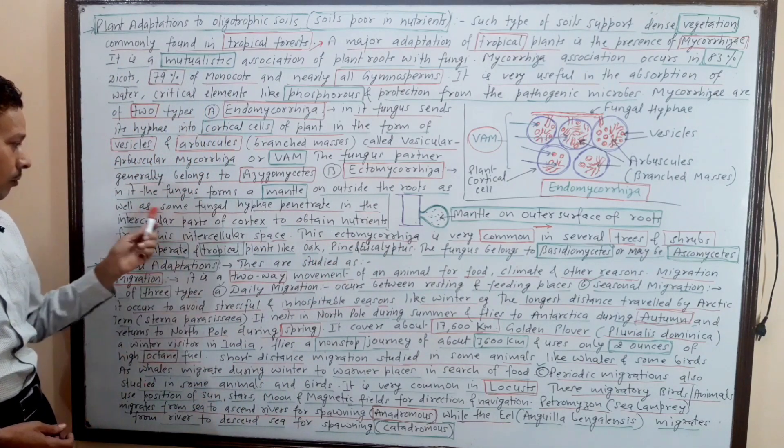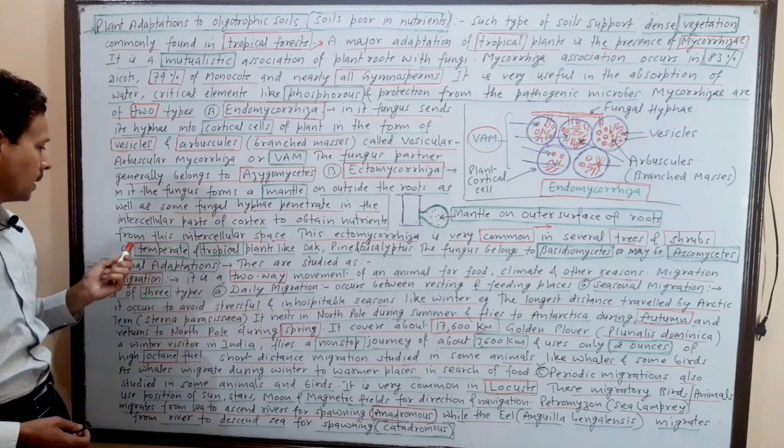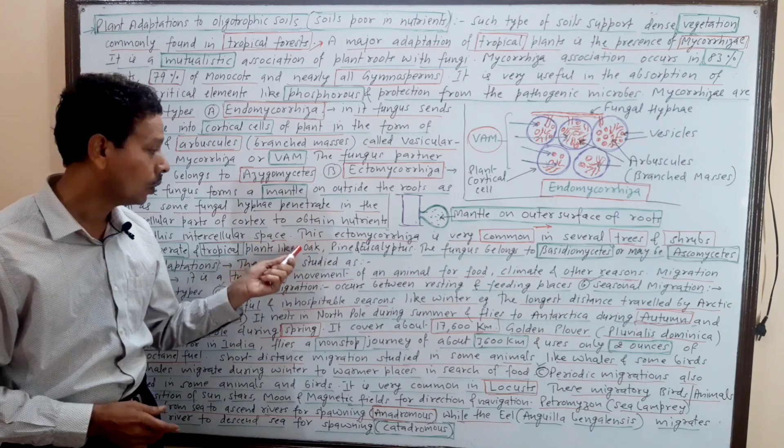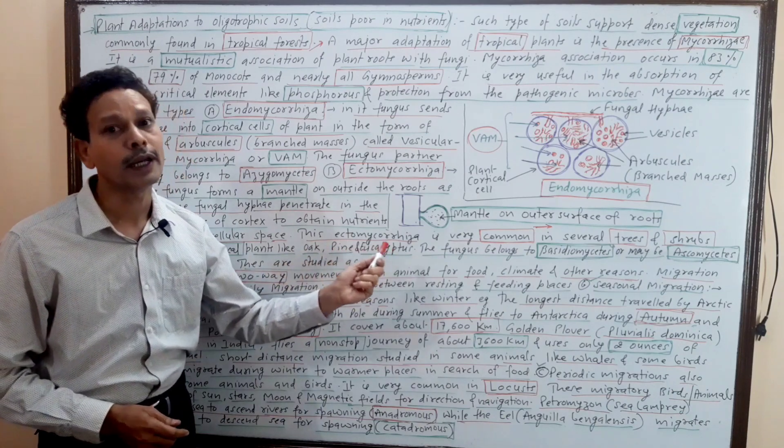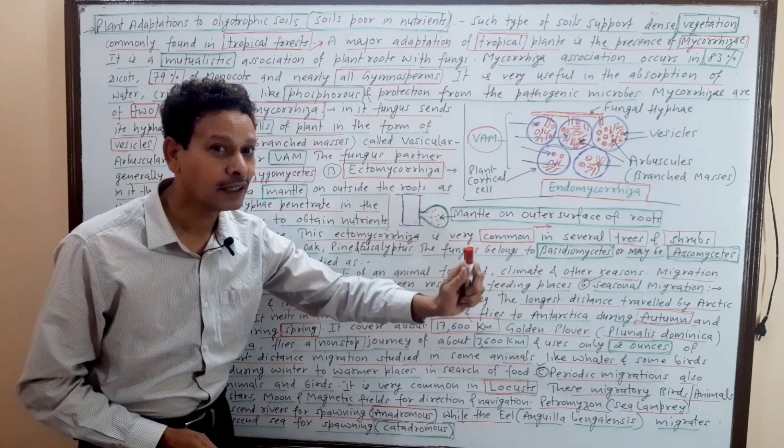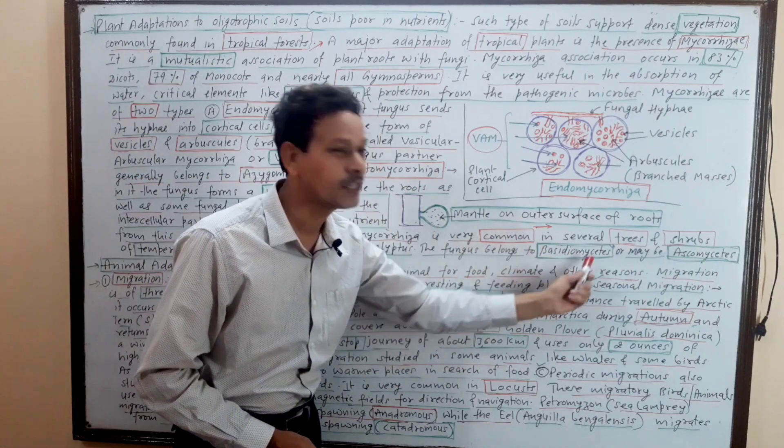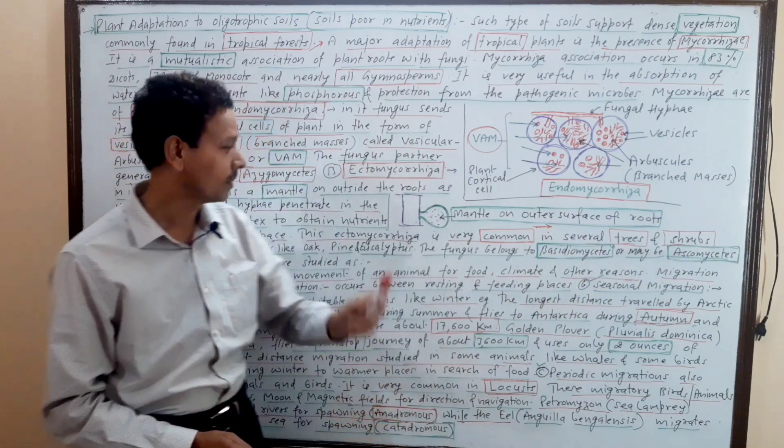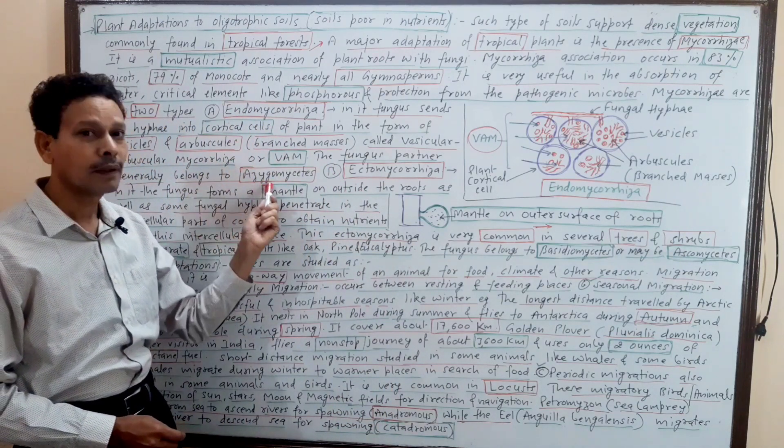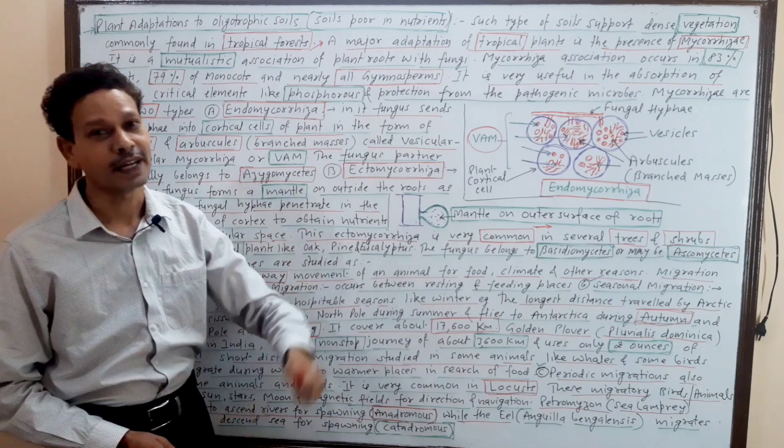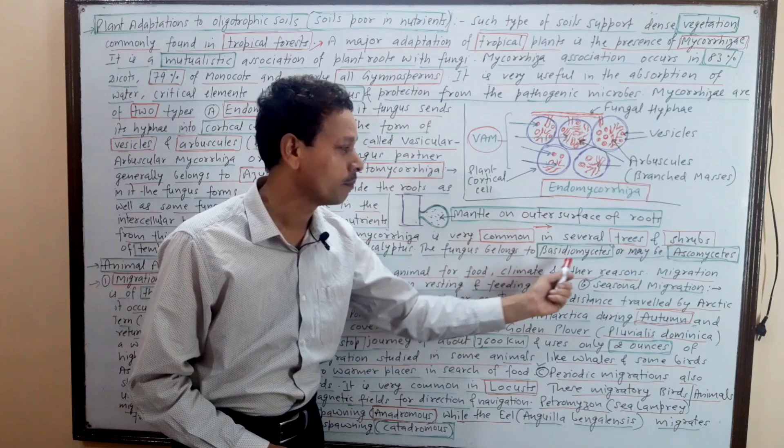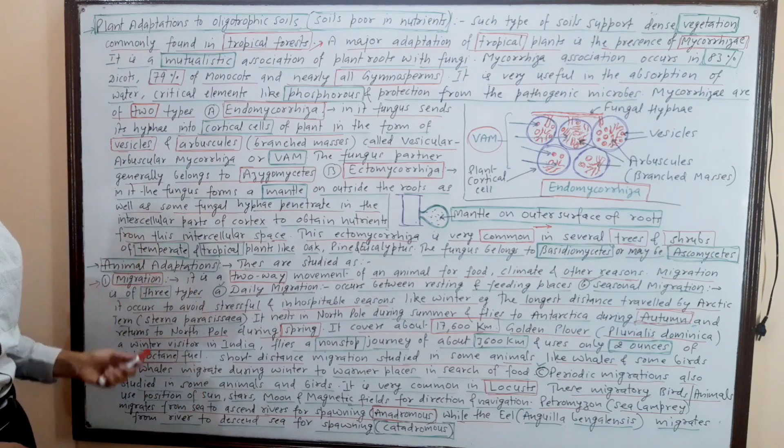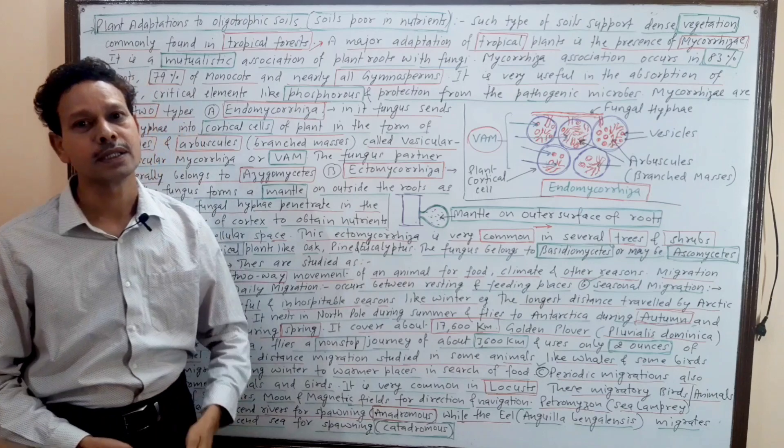Ectomycorrhizae - it is very clear the fungus outgrowth on plant roots' outer surface, this is mantle. In case of ectomycorrhizae, both types of plants - temperate and tropical plants. Examples - focus on oak tree, pine tree, eucalyptus. The fungus partner generally belongs to Basidiomycetes. It may be Ascomycetes. In endomycorrhizae, the fungal partner belongs to Zygomycetes, and in case of ectomycorrhizae, the fungus generally belongs to Basidiomycetes class.